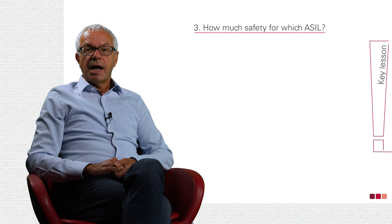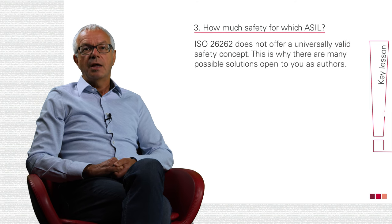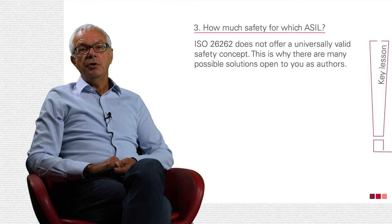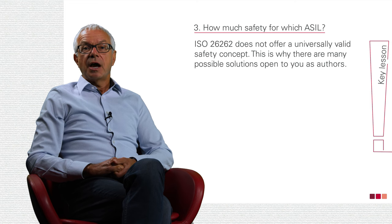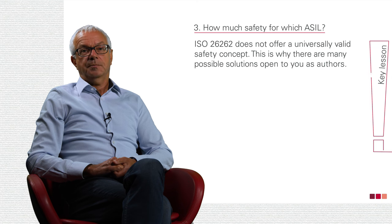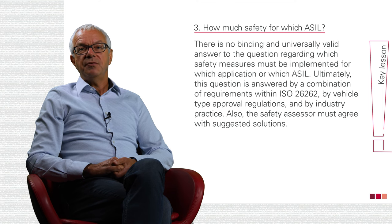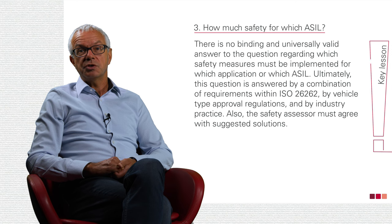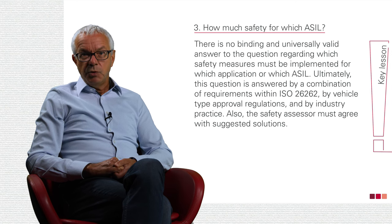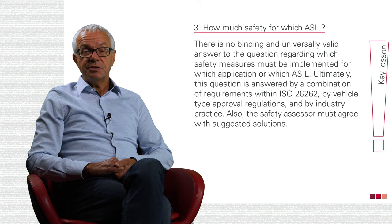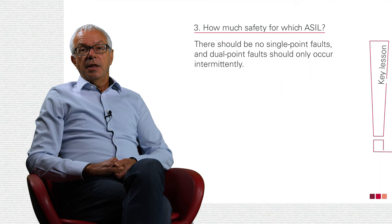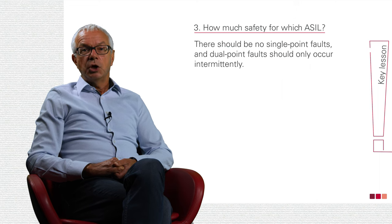I would like to capture three further lessons. First, ISO 26262 does not offer a universally valid safety concept, which is why there are many possible solutions open to you as authors. Second, there is no binding and universally valid answer to the question of which safety measures must be implemented for which application or which ASIL. Ultimately, this is answered by a combination of requirements within ISO 26262, vehicle type approval regulations, and industry practice — and the safety assessor must agree with the suggested solutions. Third, there should be no single point faults, and dual point faults should only occur intermittently.